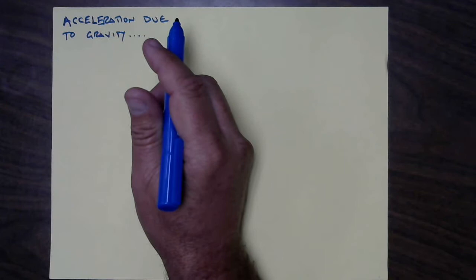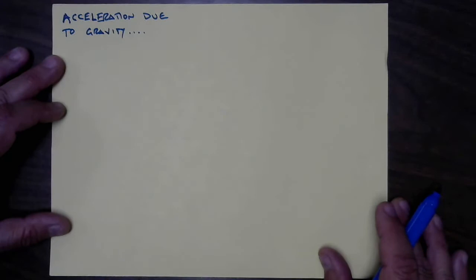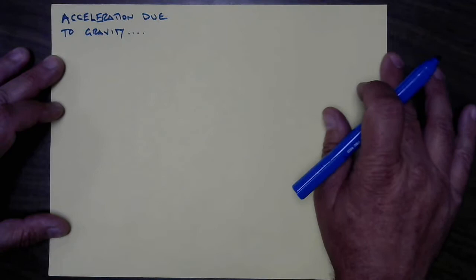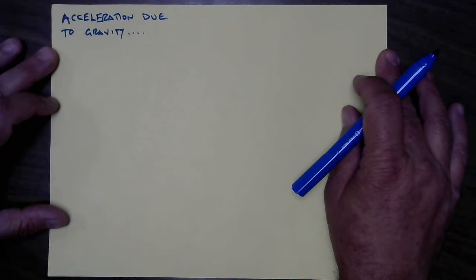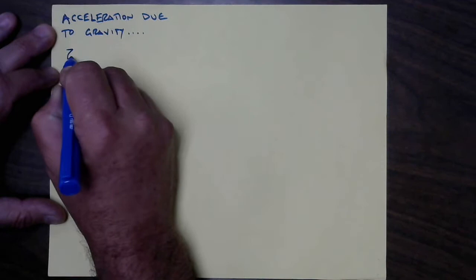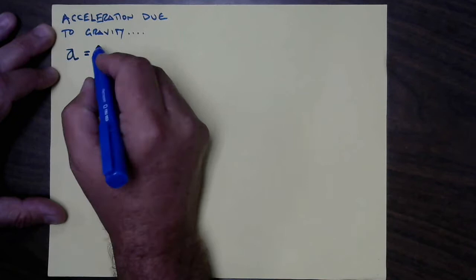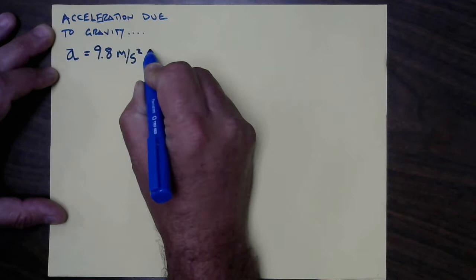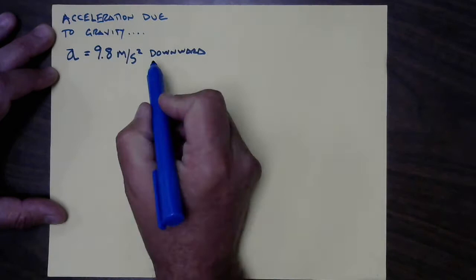with the same acceleration. That was a surprising result because we kind of expect bigger, heavier things to fall faster than little things. But it turns out that their acceleration — the rate at which the speed increases — is the same for everything. We'll see why when we learn how gravity works, but for now the acceleration of an object under the influence of gravity at the earth's surface is 9.8 meters per second squared downward.